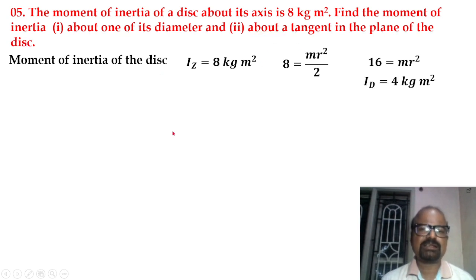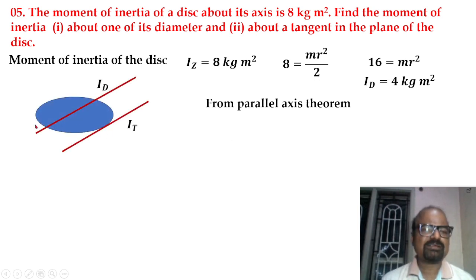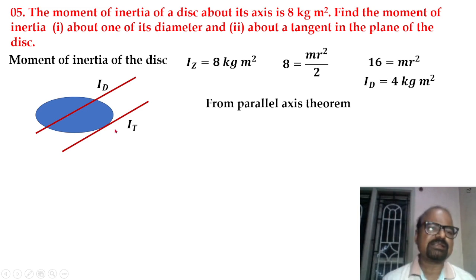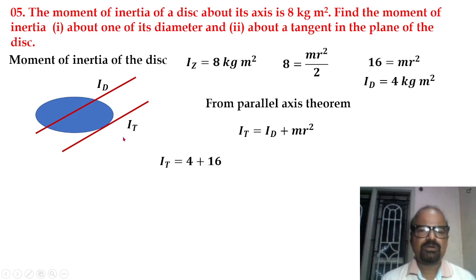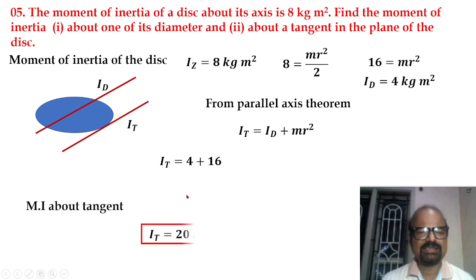For the moment of inertia about a tangent in the plane of the disk, we apply the parallel axes theorem. The tangent axis is parallel to the diameter axis with perpendicular distance equal to the radius R. So I_tangent = Id + mR². Substituting Id = 4 and mR² = 16 gives the tangent moment of inertia equal to 20 kg·m².